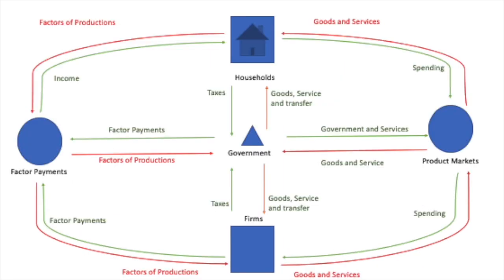To make this a little bit more complex, we go ahead and add in the government in the middle of our circular flow. Taxes inflow to the government from households and from firms. Outflow from the government for those taxes are going to be goods and services and transfer payments. Transfer payments are going to be something like welfare checks, social security, any type of redistribution of wealth.